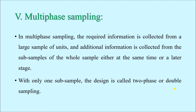If we have one sample and from that one sample we select only one subsample, then it is also known as two-phase sampling or double sampling, since we are gathering the information in two phases — first from the whole sample and second from the subsample.